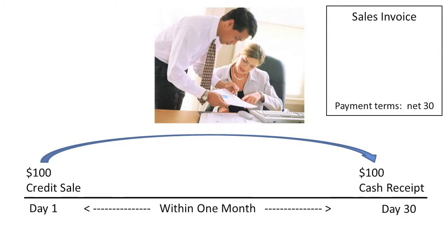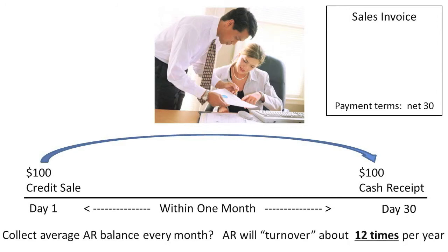A 30-day collection period, i.e. one month, equates to an Accounts Receivable Turnover Ratio of 12 times per year, meaning the company is able to sell and collect an amount equal to its average Accounts Receivable balance 12 times per year.